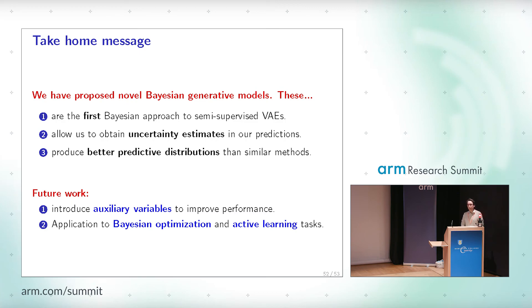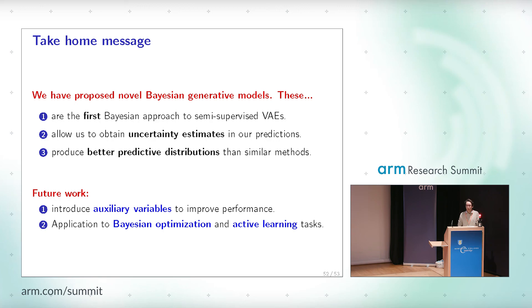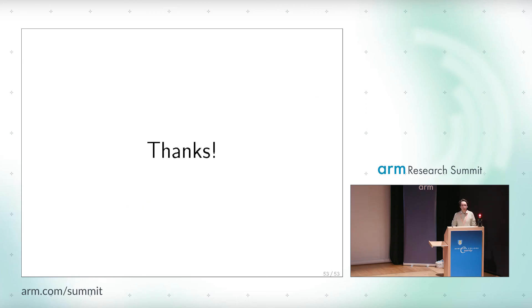To conclude, some take-home messages: in this talk we described a novel Bayesian approach for generative models applied to semi-supervised variational autoencoders. It is the first Bayesian approach to this type of model, allowing us to obtain uncertainty estimates in predictions which previous models couldn't produce, and it produces better predictive distributions than similar models. For future work, we propose to introduce auxiliary variables to improve performance to be comparable to state-of-the-art techniques, and to apply these techniques to different tasks where reliable uncertainty estimates are useful, such as Bayesian optimization and active learning.